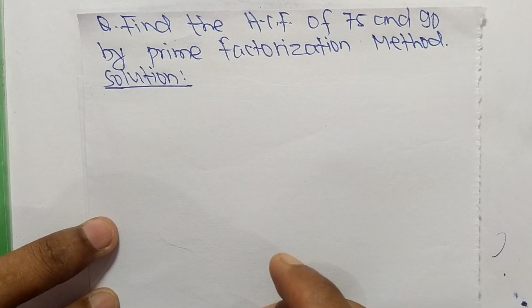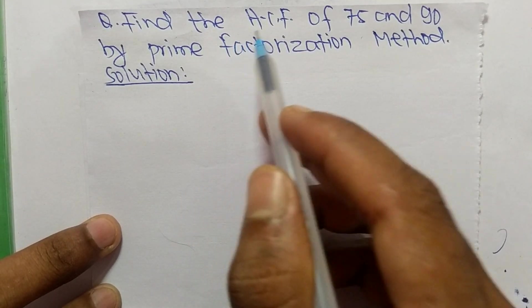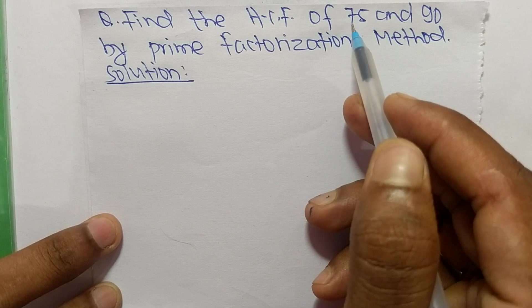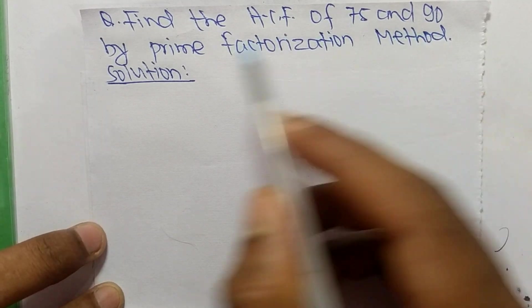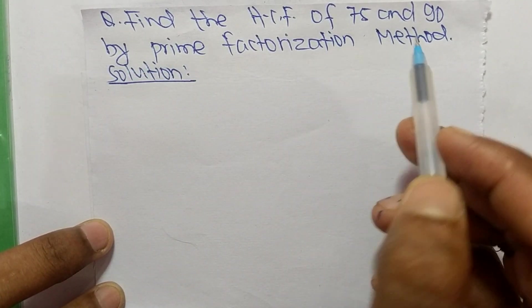So today in this video we shall learn to find the HCF of 75 and 90 by prime factorization method.